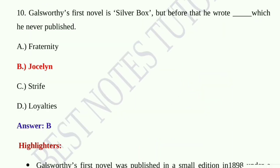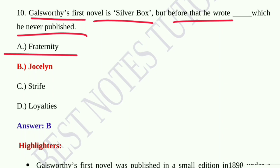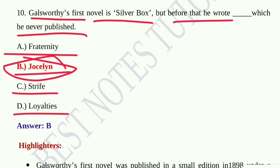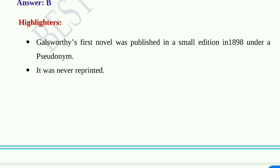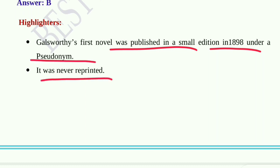Question number ten: Galsworthy's first novel was not published. His unpublished first novel was option A, Fraternity; option B, Jocelyn; option C, Strife; option D, Loyalties. The answer is Jocelyn. Galsworthy's first novel was Jocelyn, published in a small edition in 1898 under a pseudonym and never reprinted.